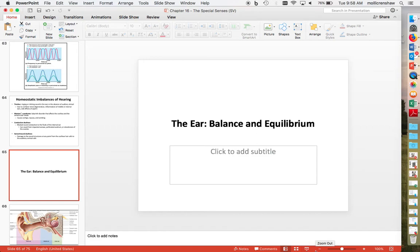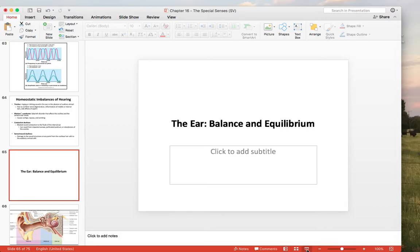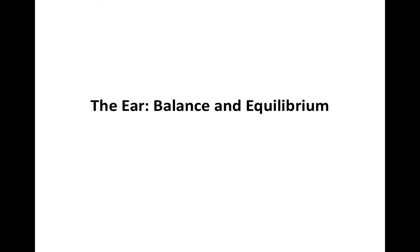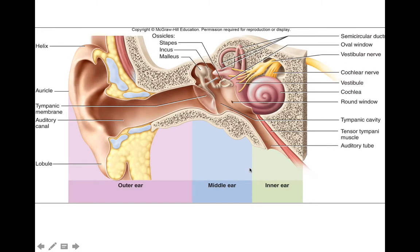We're going to look at how the ear is tied to balance and equilibrium, as opposed to the sense of hearing. Coming back to the ear's anatomy, the outer ear and middle ear are associated only with hearing. It's not until we get to the inner ear that we find structures dedicated to balance and position. The cochlea and cochlear nerve are for hearing, while the vestibule and semicircular canals are associated with balance and position.